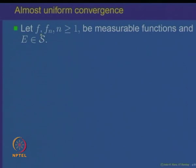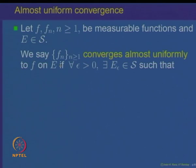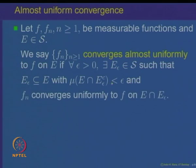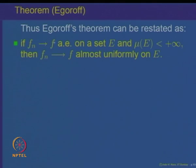Let us make a new definition. For measurable functions F_n, F and a set E in the sigma-algebra, one says F_n converges almost uniformly to F on E if for every epsilon, there is a set E_epsilon in the sigma-algebra such that mu(E - E_epsilon) is small and F_n converges uniformly on E_epsilon. Such convergence is called almost uniform convergence — it is essentially uniform except on a set of small measure.